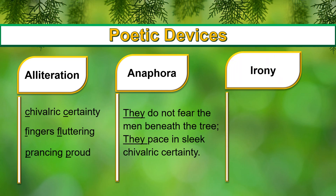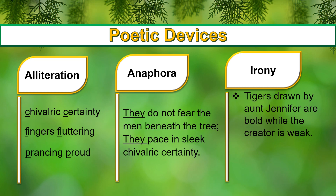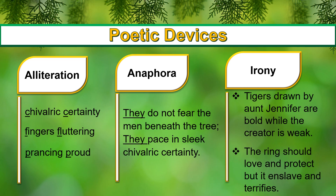Irony is a form where the literal meaning is completely opposite to what is conveyed by the author. 'Will go on prancing proud and unafraid' — these lines bring forth a sense of irony as the tigers are much stronger than the woman who created them. It is ironical that Aunt Jennifer's creations, the tigers, will continue to pace and prance freely while Aunt herself will remain terrified even after death. Another example is the ring — it should represent love and protection but instead it enslaves and terrifies Aunt Jennifer.